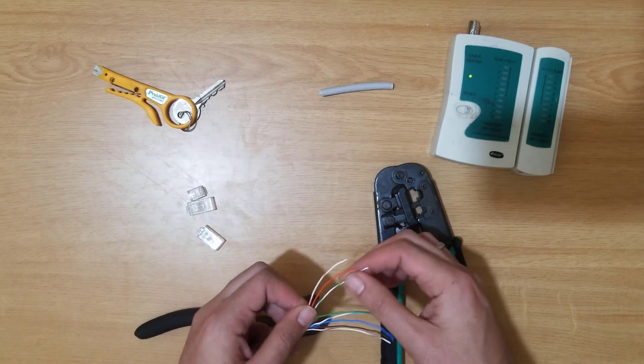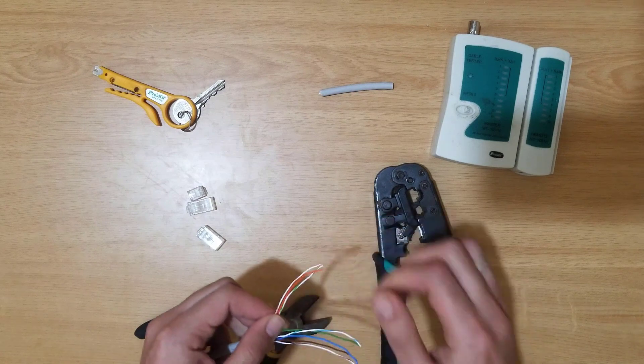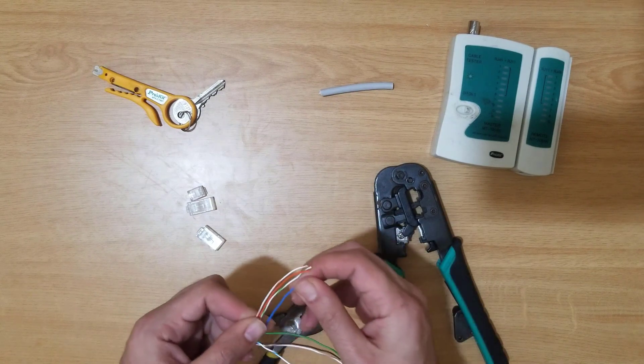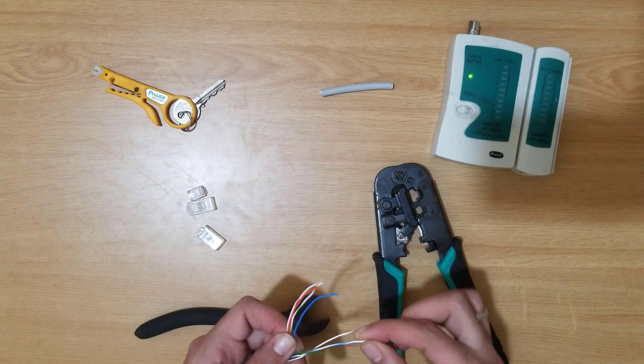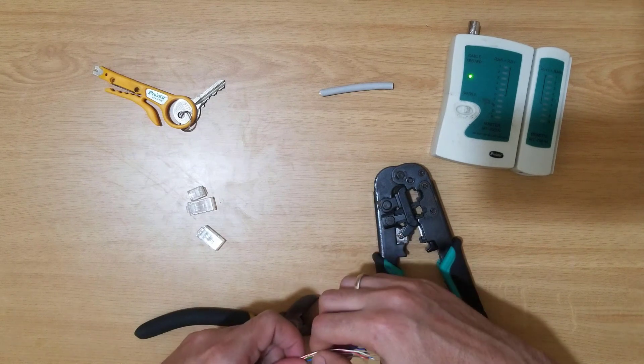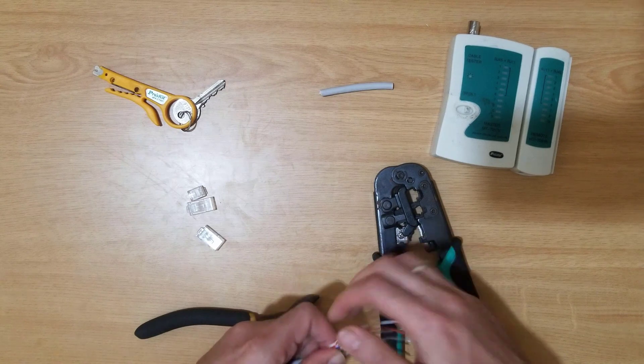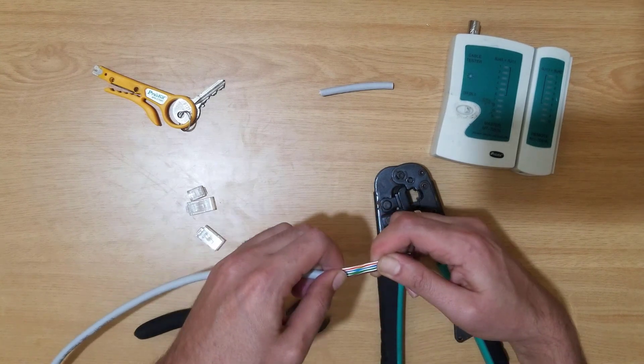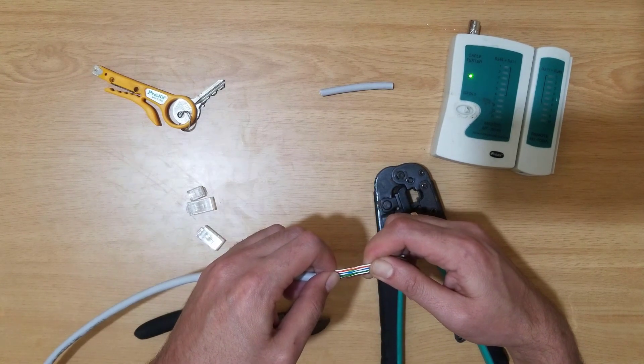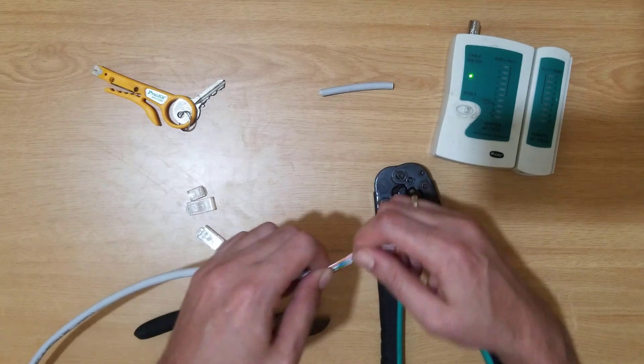After white-green comes blue, then white-blue, then green, then white-brown, brown always coming last. Here you can see: white-orange, orange, white-green, blue, white-blue, green, white-brown, brown, and all are straight.